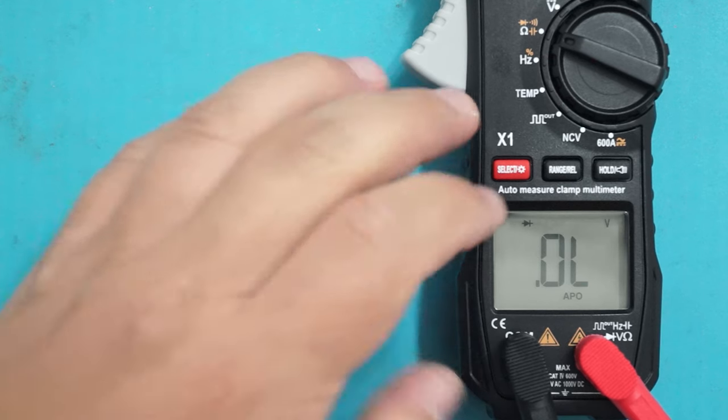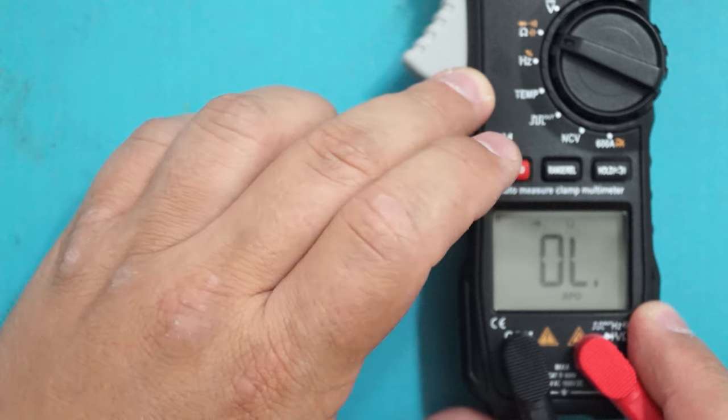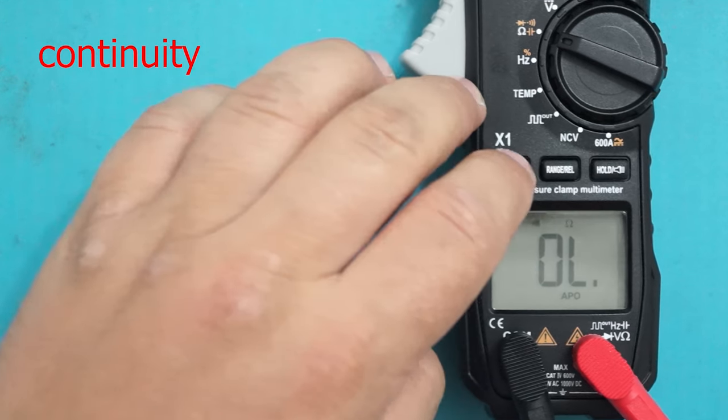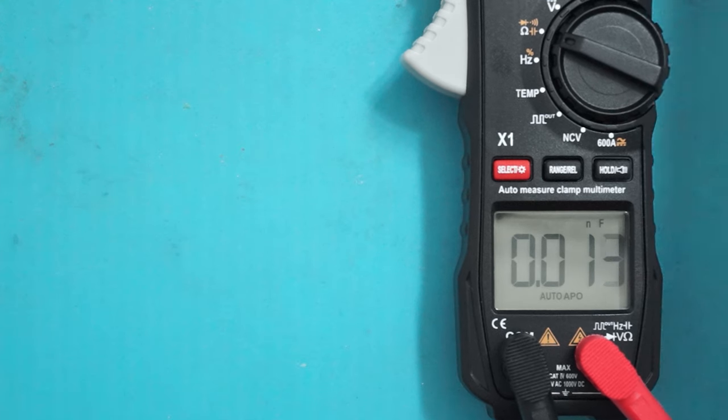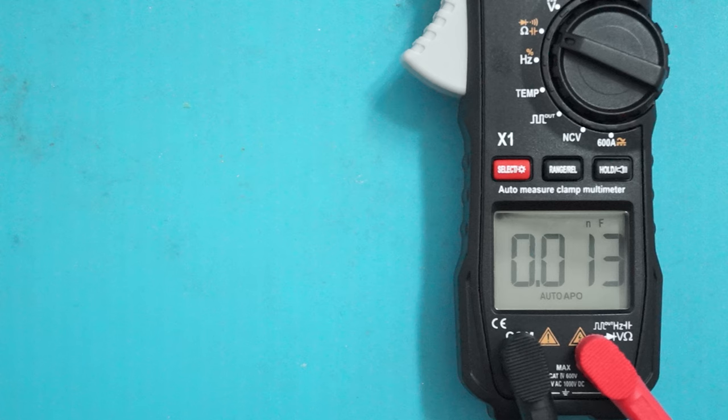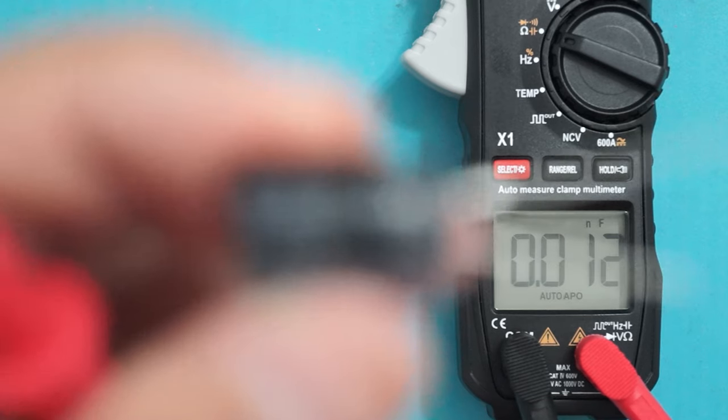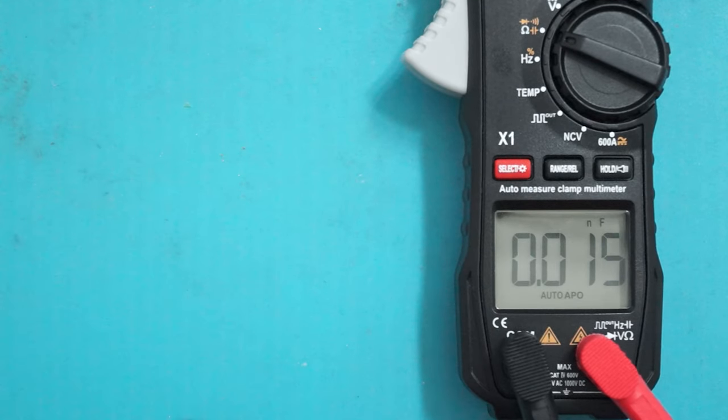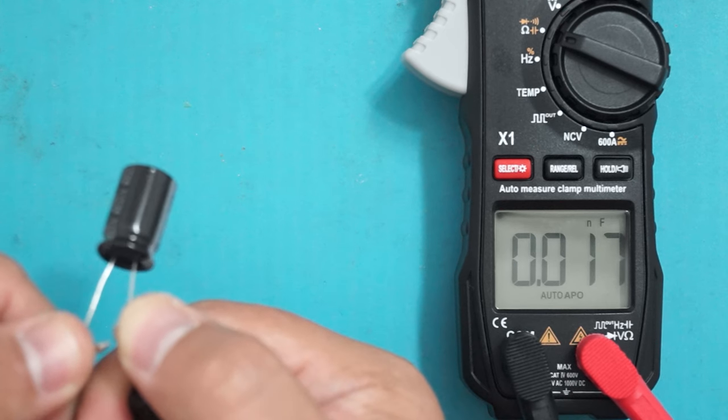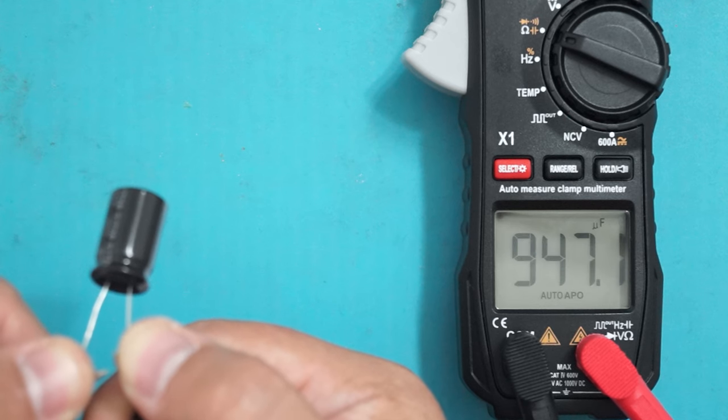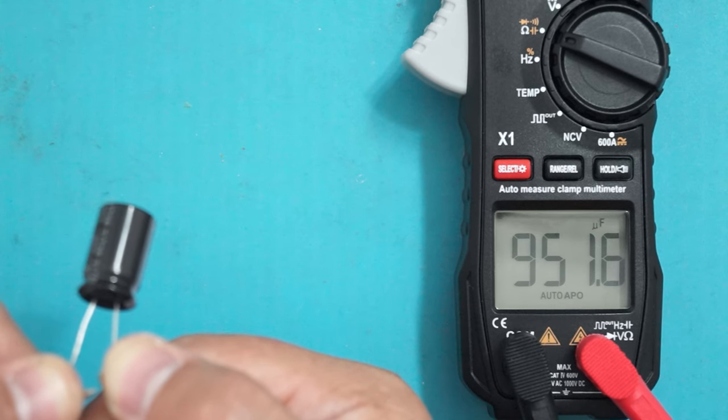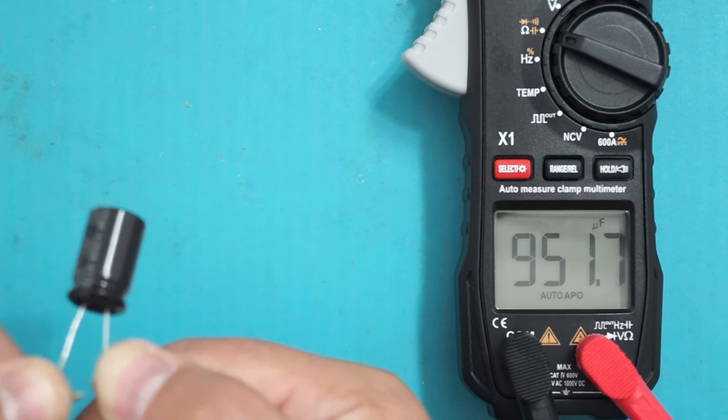To measure capacitors, if we want to measure capacitors, I have a 1000 microfarad capacitor here. You have to wait a bit for the capacitor to charge. So now it's charged and it's saying 951 microfarad, so again, pretty accurate.